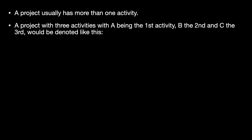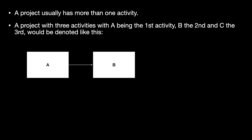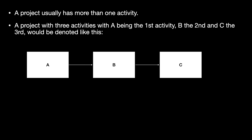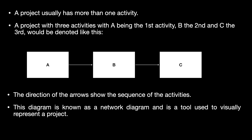Now if we had a project with three activities, with A being the first, B being the second, and C being the third activity, it would look something like this. So we have activity A, then we have an arrow pointing towards activity B, and then an arrow pointing towards activity C. The direction of the arrows signifies the sequence of the activities. This diagram is known as a network diagram and it is a tool which is used by project managers to visually represent a project.